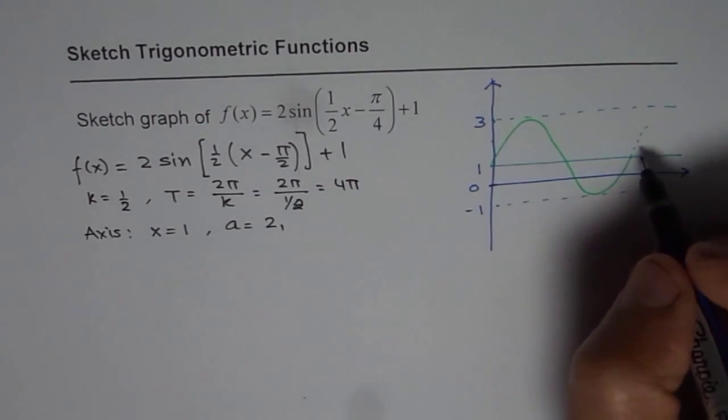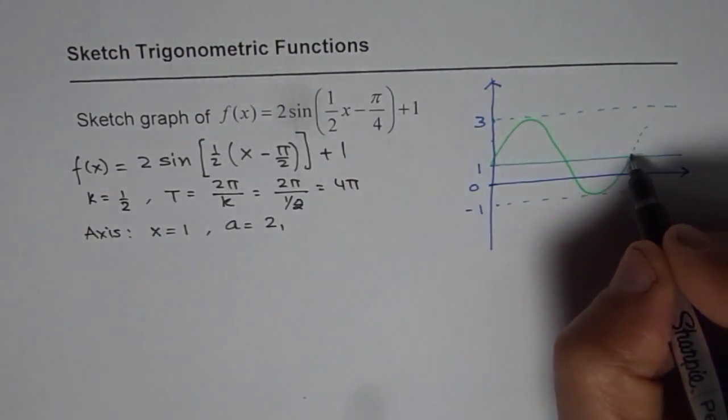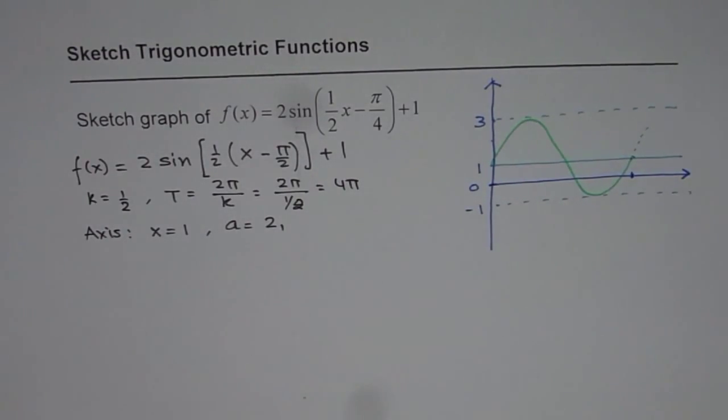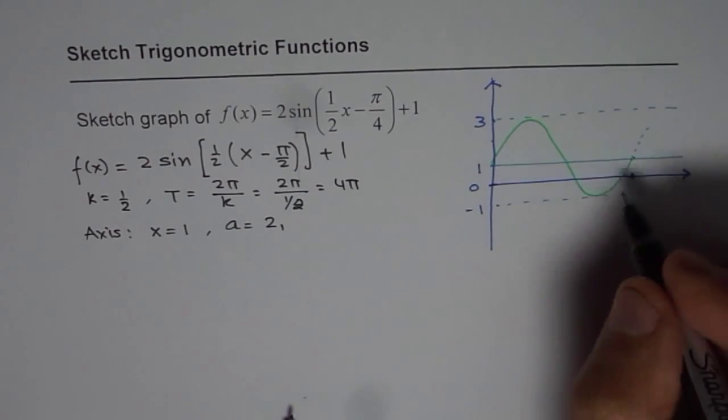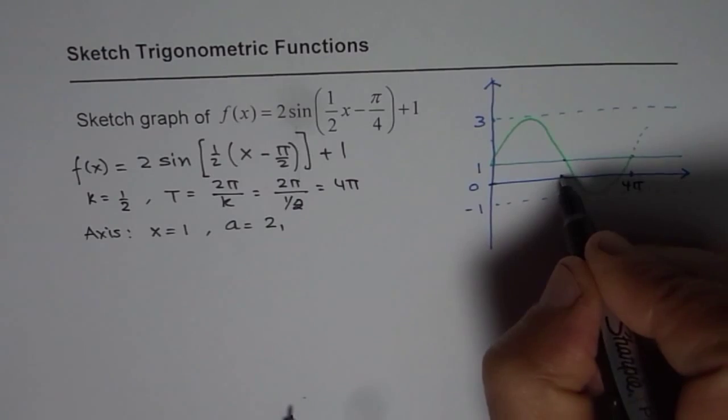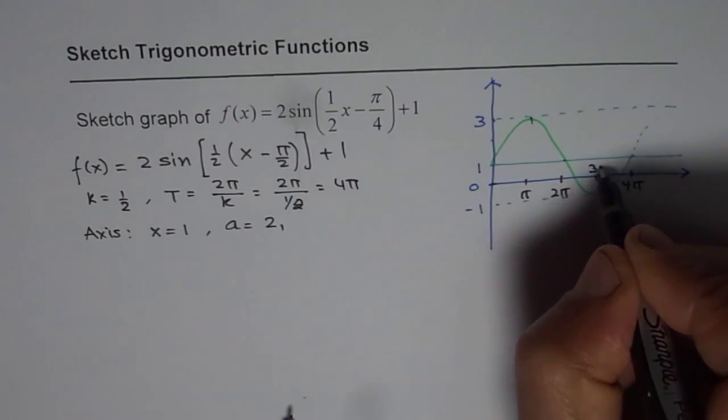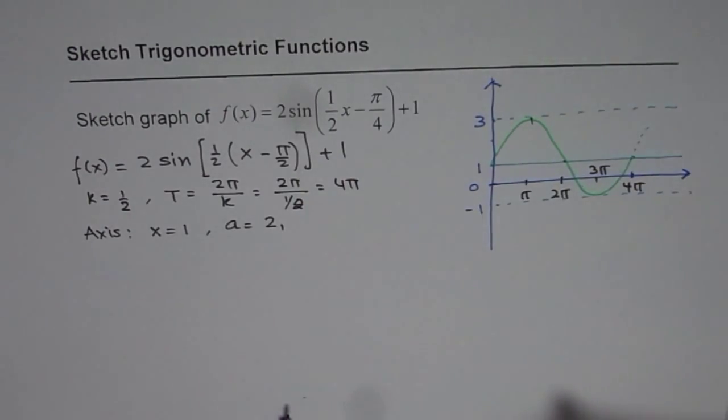Now time period for this particular function is 4 pi. Do you see that 4 pi? So that means if you are starting at zero, this has to be ending at 4 pi. So let me write 4 pi right there. If this is 4 pi, this point center value will be 2 pi. And these will be pi and that will be 3 pi. So that is how the graph is.